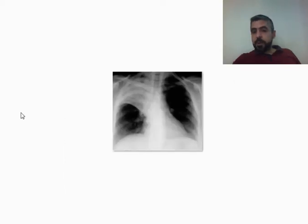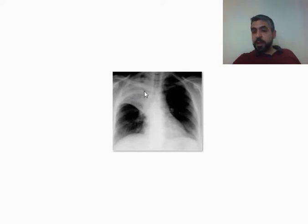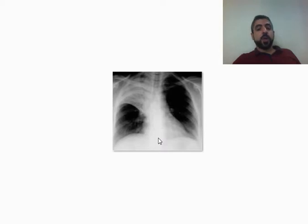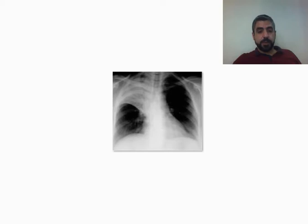Another example of lobar consolidation: the transverse fissure is pulled upward, the right upper lung zone is white, and it contains some small thin lines indicating air bronchogram. These are the features of right upper lobe consolidation-collapse — it is consolidated and transforming into a collapsed lobe.